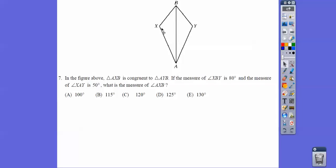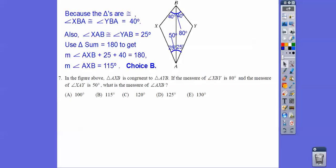And the measure of angle XYA is 50, so similarly that's 25 and that's 25. So AXB is going to be the rest of the triangle right there. So when you do all that math and add it up to be 180, we get choice B.